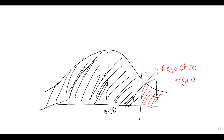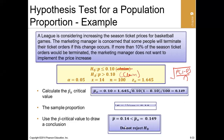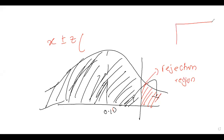Let's compute the upper limit of this — the confidence interval upper limit. It will be x plus or minus the Z value times the standard error of proportion. The standard error of proportion is the square root of p times (1 minus p) over n. The proportion is 0.1 into bracket (1 minus 0.1), all over 100, under the square root.